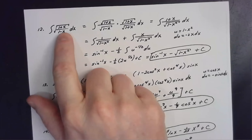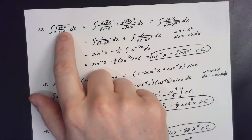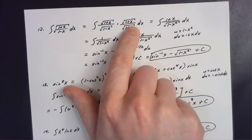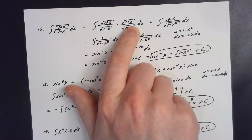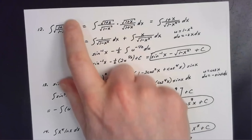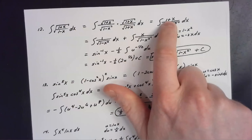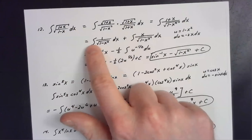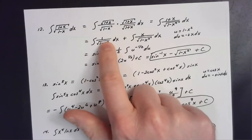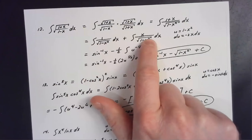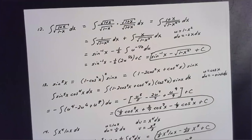So for this problem, the technique needed was algebraic simplification to eliminate the square root in the numerator. Once done, separating it gave two pieces: the first integrated to arcsin(x), and the second needed only a simple substitution.